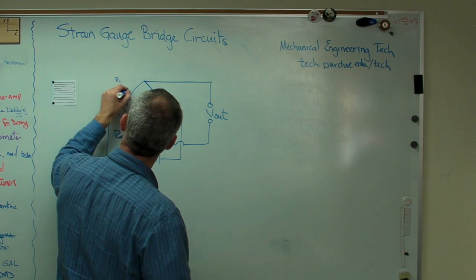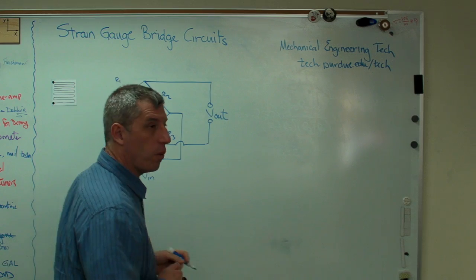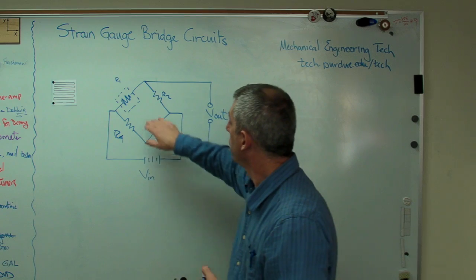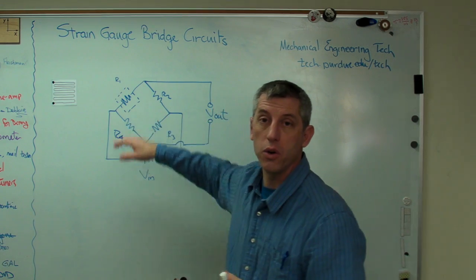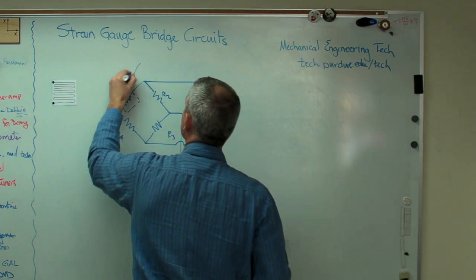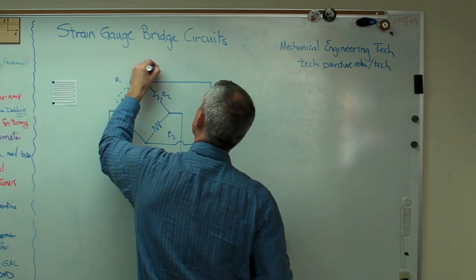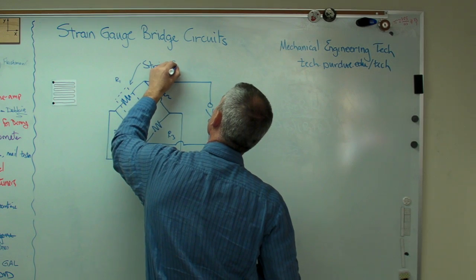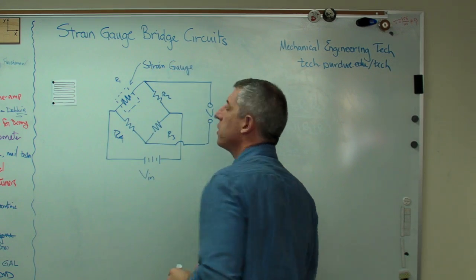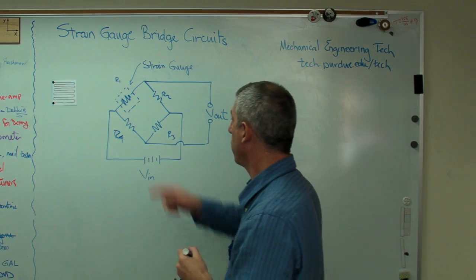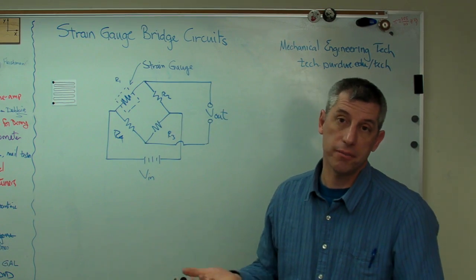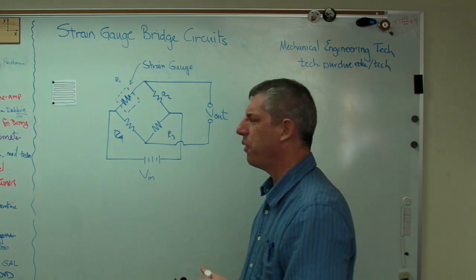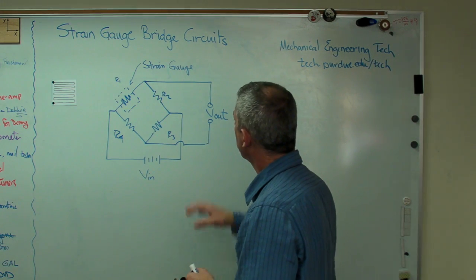Now, the simplest strain gauge circuit is to make R1 your gauge. Now, there's four resistors there. Any of them could be your gauge. This is, not too surprisingly, called a quarter bridge. That's our strain gauge right there. And it's called a quarter bridge because one quarter of your resistors are strain gauges. Makes sense. There's also a half bridge and a full bridge. Now, I haven't seen a three-quarter bridge, but I suppose you could make one.